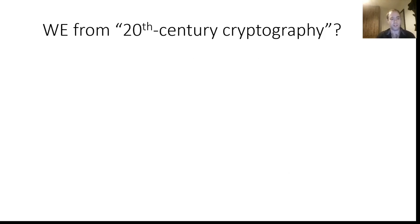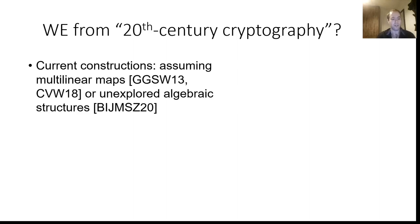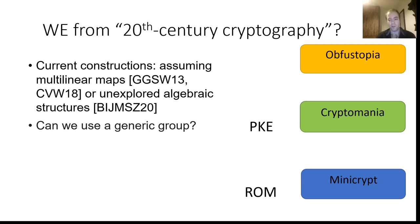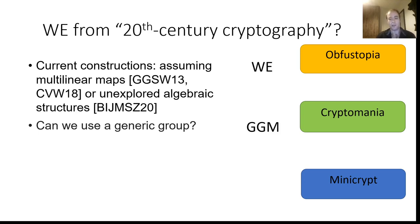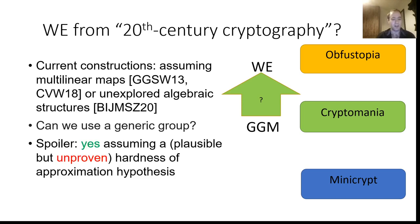For the second question of obtaining witness encryption from 20th-century cryptography: current constructions of witness encryption assume multilinear maps or unexplored algebraic structures. Can we use a generic group to construct witness encryption? This question is similar in flavor to one raised by Impagliazzo and Rudy. We can divide the cryptographic world into Minicrypt — primitives constructed in the random oracle model — Cryptomania, primitives derived from key agreement and public key encryption, and Obfustopia, primitives requiring obfuscation. Impagliazzo and Rudy asked whether we can obtain public key encryption in the random oracle model and discovered the answer is no. We asked whether we can obtain witness encryption — primitives so far constructed only with obfuscation — with the generic group model that has a Cryptomania flavor. It turns out the answer is yes, assuming plausible but unproven hardness of approximation hypotheses.